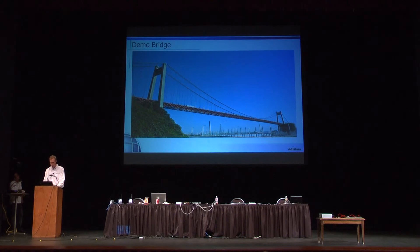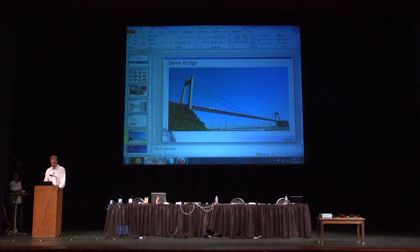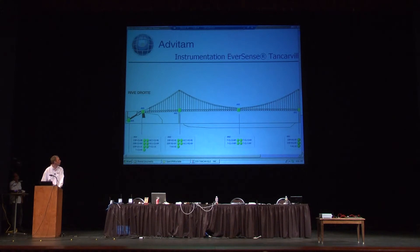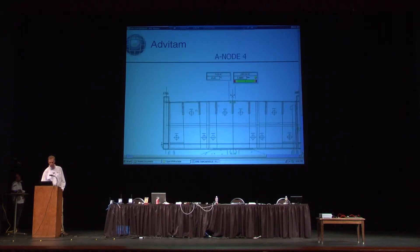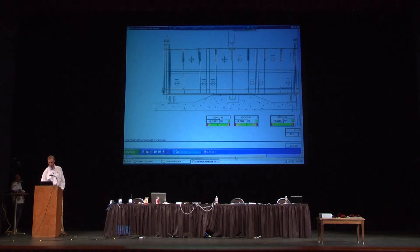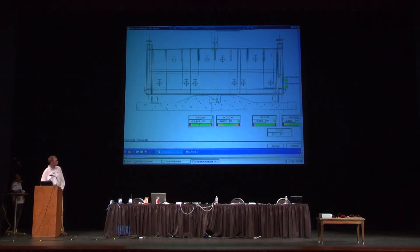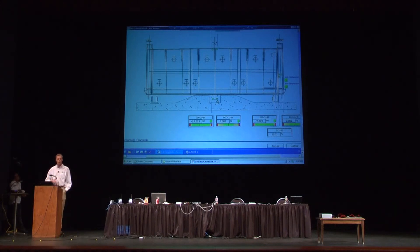This is a picture of the bridge — a suspension bridge. I'm going to connect now to the system. This is the general view of the system; we are remotely connected right now. I've selected one of the nodes on the system. You can see the temperature, displacement, and a side view of the bridge with the placement of the sensors. The green dots indicate a sensor — if it's green, the sensor is all right. We have a color code to indicate if there is an alert or if the sensor is down for any reason. Here you have the actual current values from the bridge right now in France.